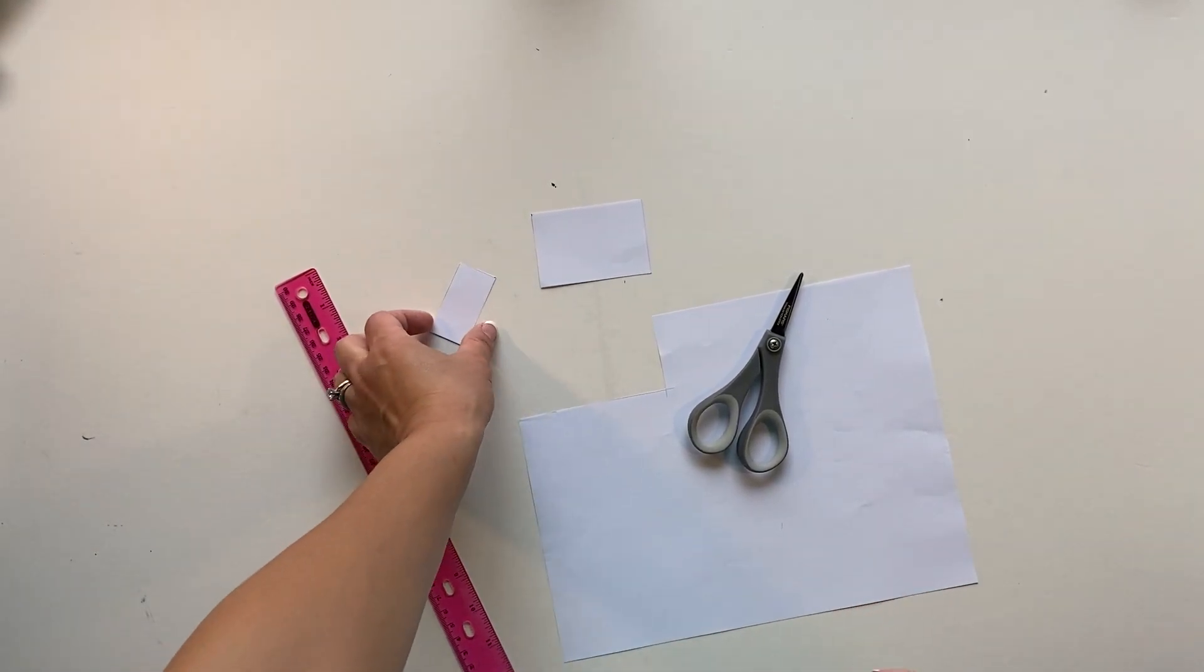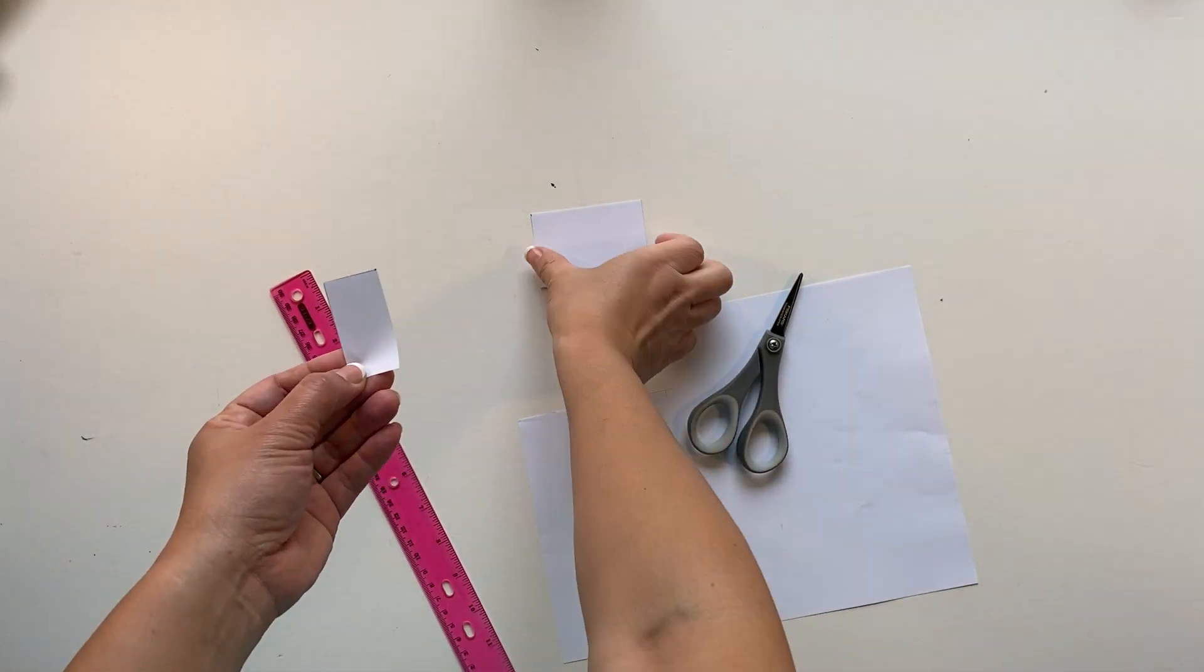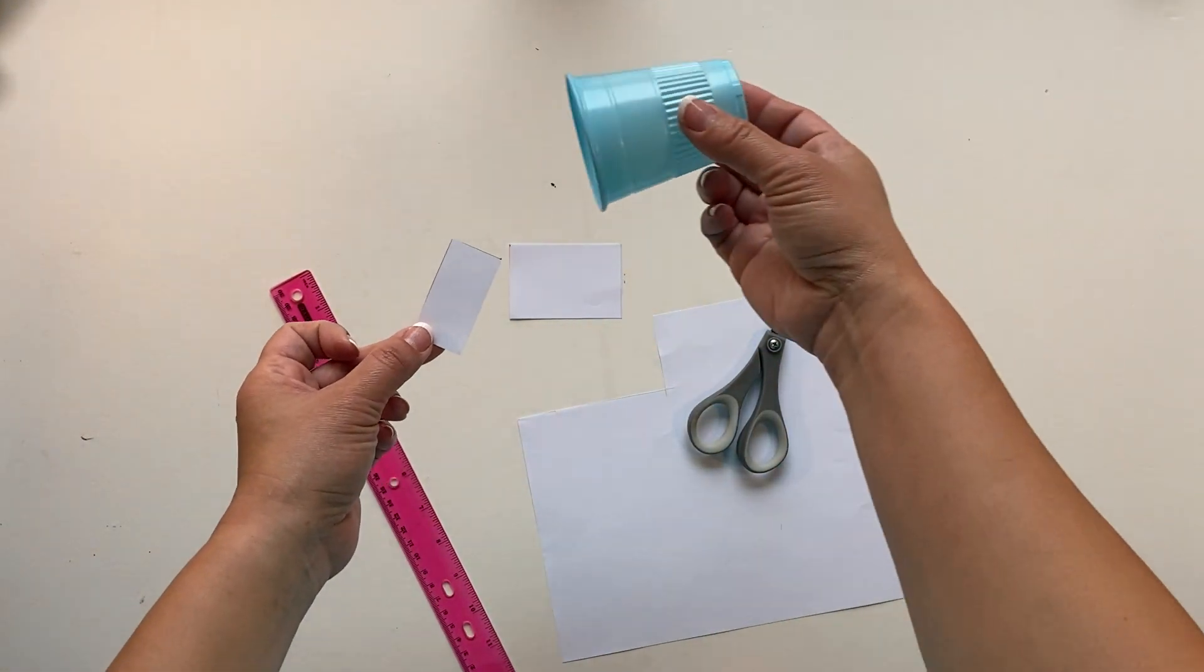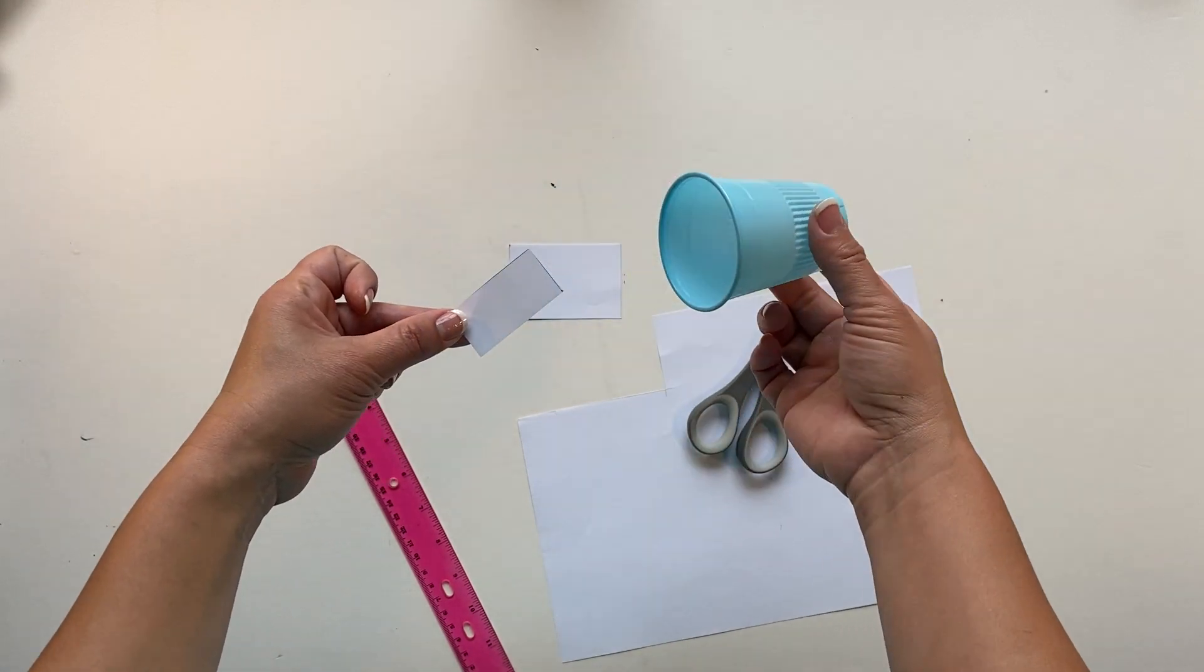So after cutting you should have a small rectangle and a larger rectangle, and this one should be able to fit in the size cup that you'll be using, and that fits perfectly.